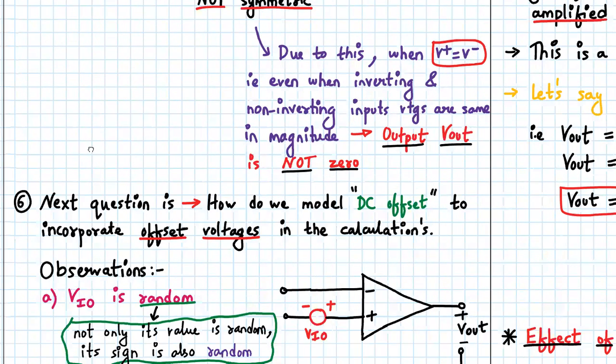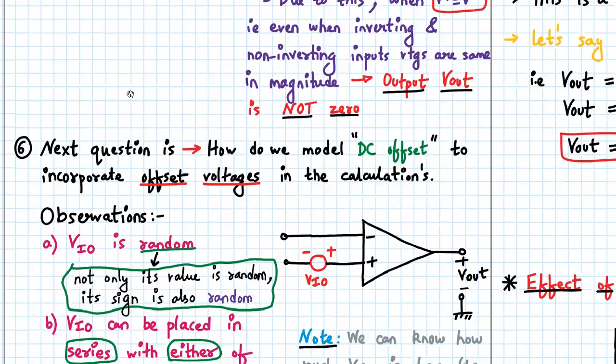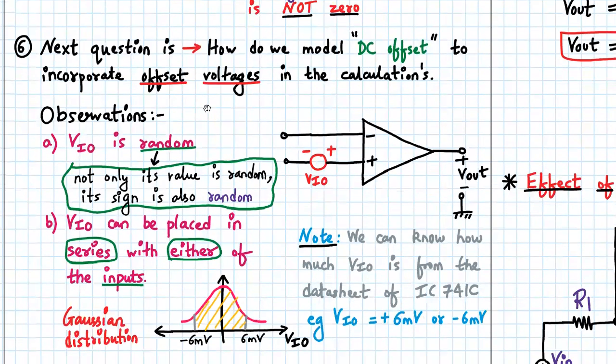So the next question is how do we model this DC offset to incorporate the offset voltage in our calculations? Earlier we considered this DC offset to be zero, but now we have seen that it's not zero. So there are a few observations we have to go through.